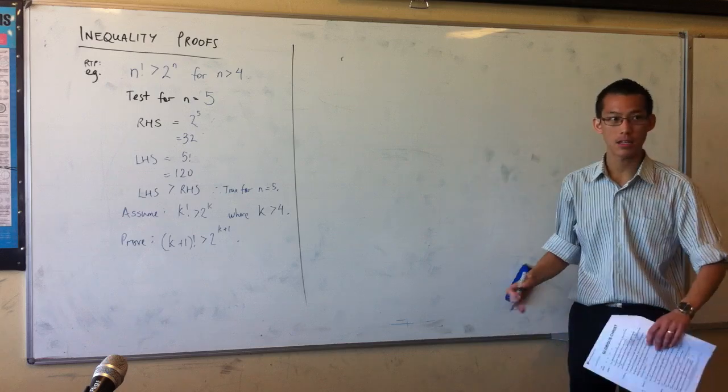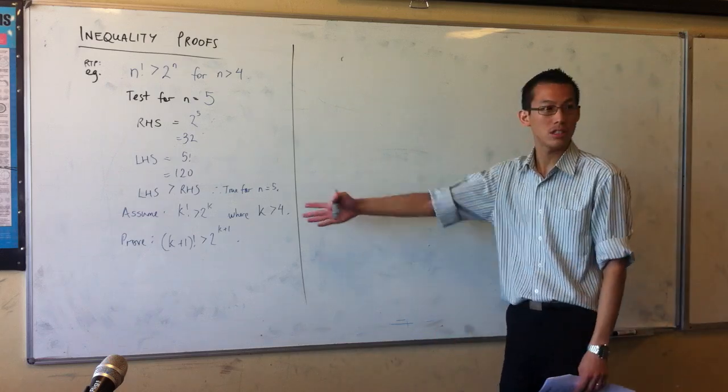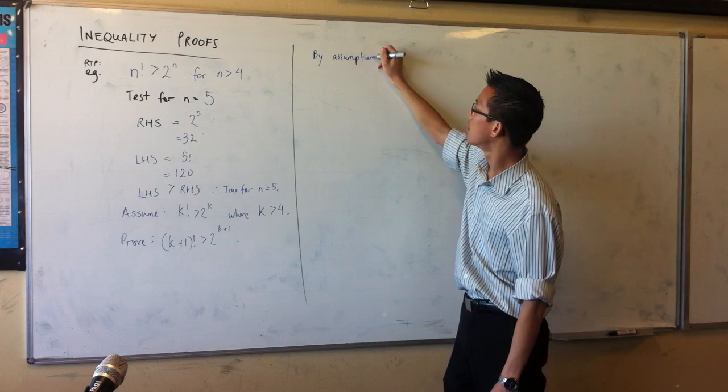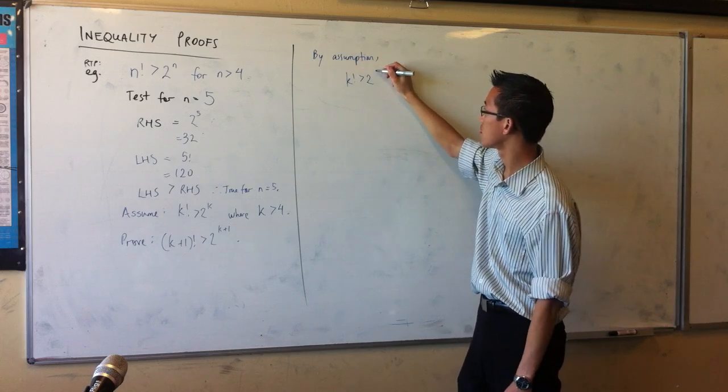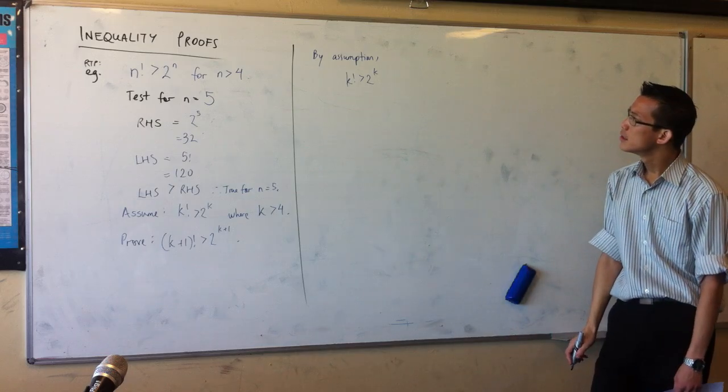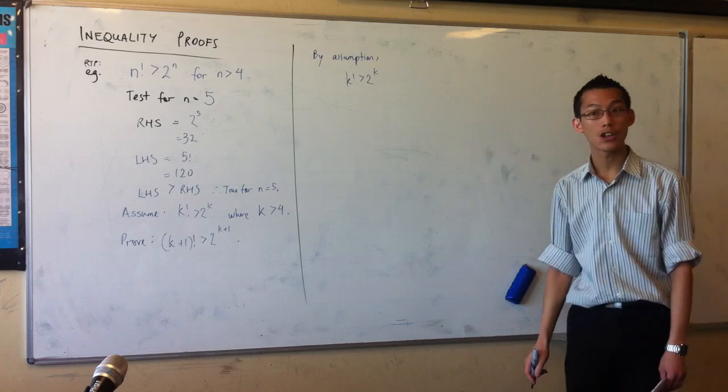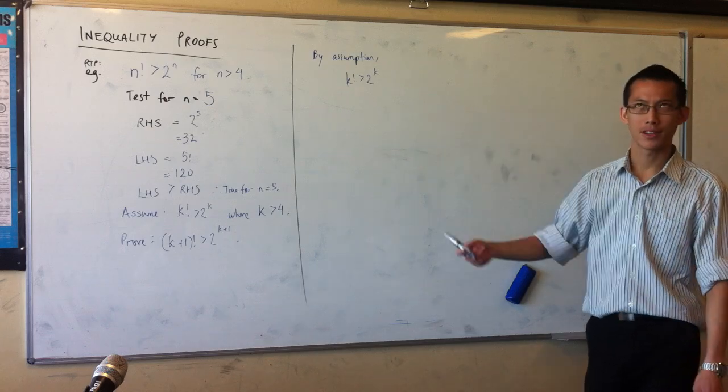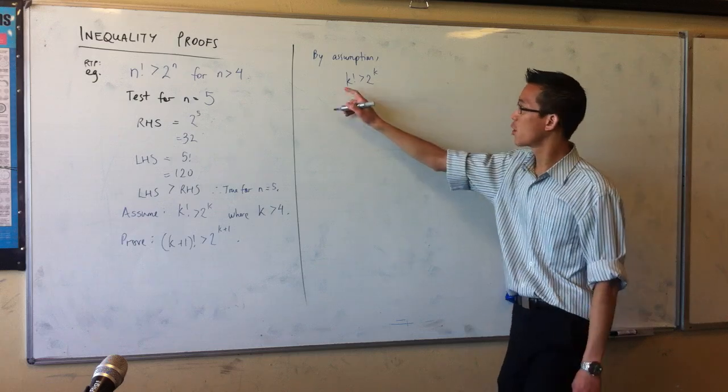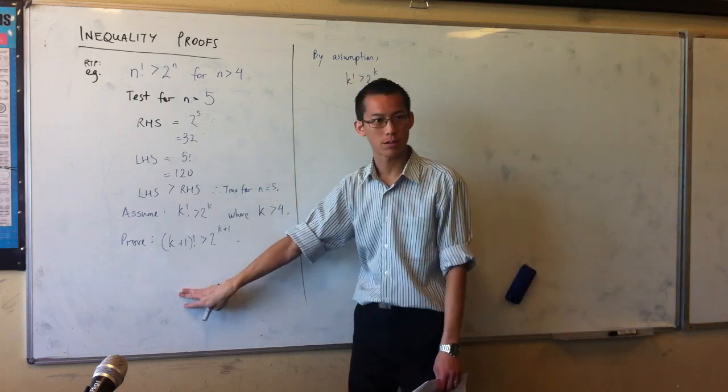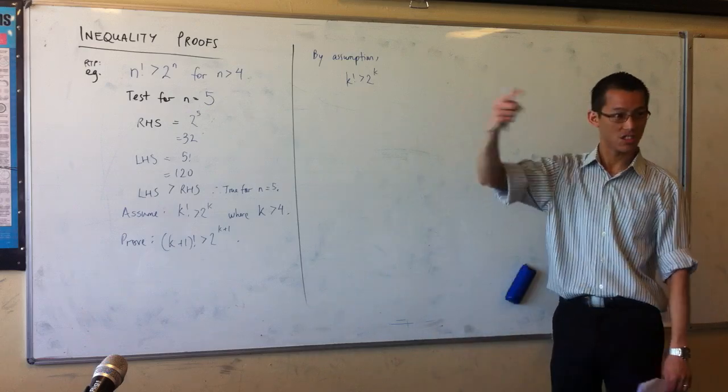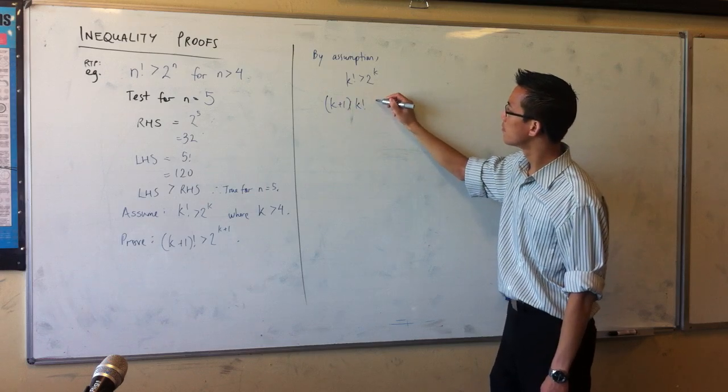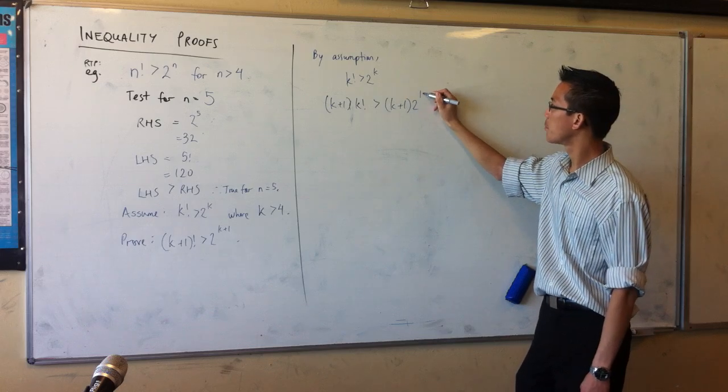Now, again, with these inequalities, I think the easiest way to... the most logical way to get to the end is to actually start with your assumptions. So by assumption, k factorial greater than 2 to the k. Now, excuse me, where do you go from there? Like I said before, you could go for either side. In this case, I think the left-hand side, conveniently, is still the easiest to go with. So if I want to turn k factorial into k plus 1 factorial, what do I have to multiply by? Yeah, just the next one at the end, right? Multiply by both sides.